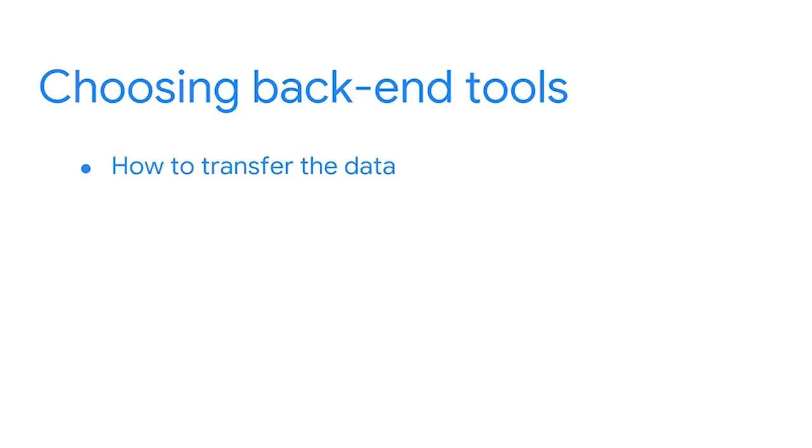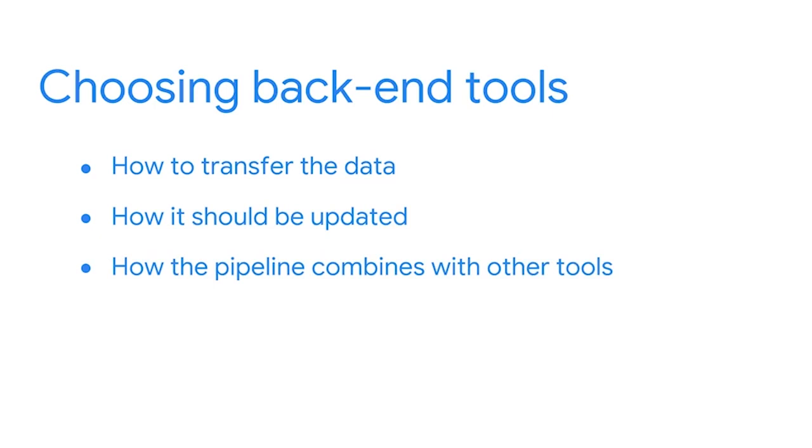After you've thought about how your stakeholders want to view the data, you'll want to consider your back-end tools — how the data needs to be moved. Not all BI tools can read data lakes, so if your organization uses data lakes to store data, you need to make sure you choose a tool that can do that. Some other important considerations include how to transfer the data, how it should be updated, and how the pipeline combines with other tools in the data transformation process. Each of these points helps you determine must-haves for your toolset, leading to the best options.